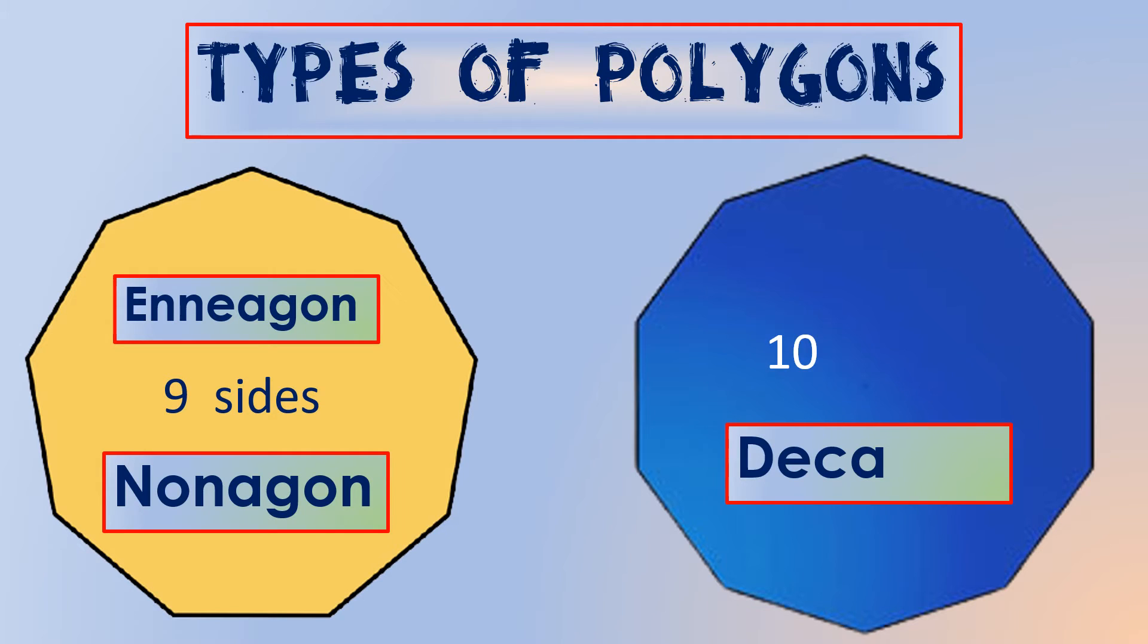Deca means ten, and gon refers to the sides. Hence, a closed figure with ten sides is called a decagon.